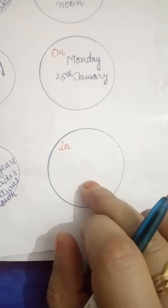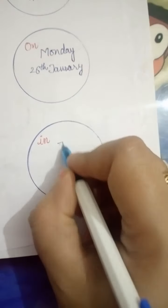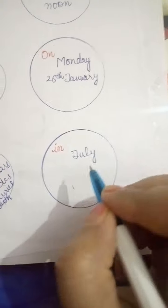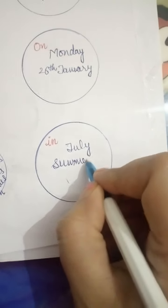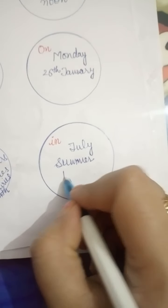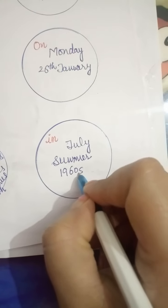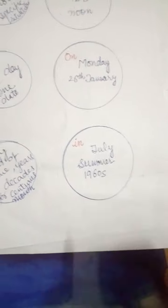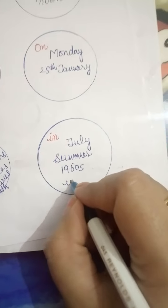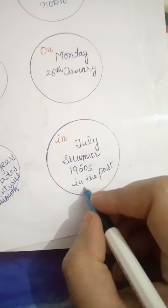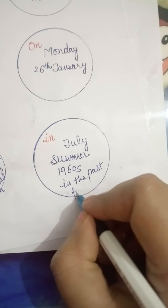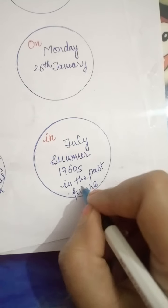Like, in the month of July, in the past. We can also say in the future.